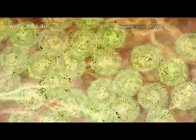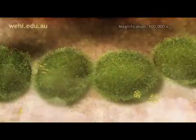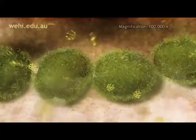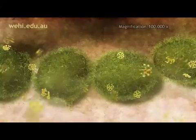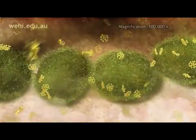The antibodies circulate in the blood and travel into tissues. They bind to the M protein hairs on the strep bacteria. This flags them for destruction by the immune system.